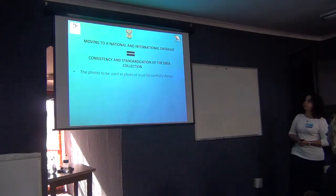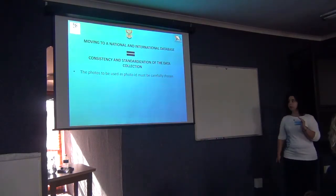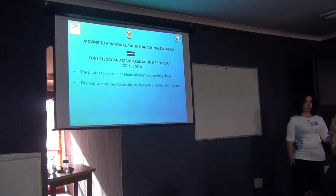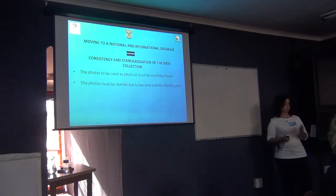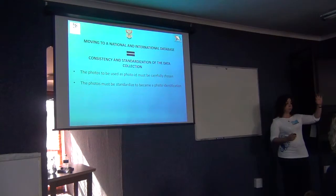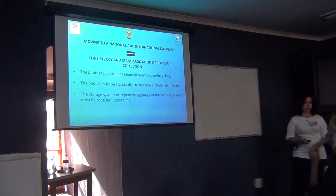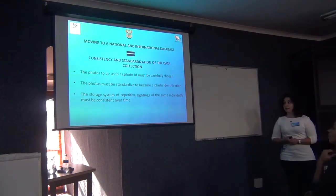For example, photo ID — to identify each individual by the dorsal fin. We need to start standardizing and choose carefully what is a photo ID and what is just a shark photo. To become a proper photo identification, we can't have one photo that is very wide with a big background alongside one that is tightly cropped. We should all come together on the same standardization method.